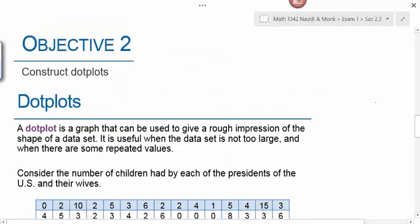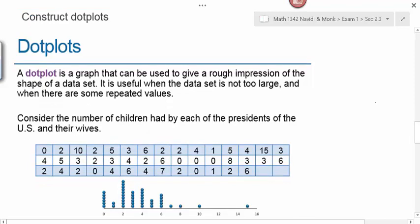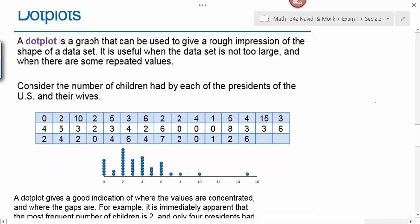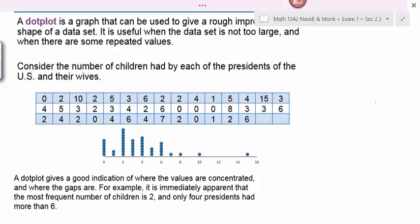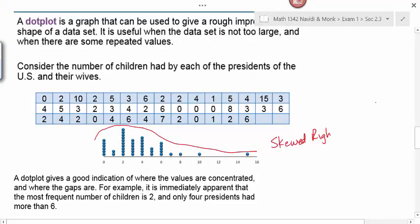Objective two is to construct dot plots. Dot plots are similar to stem and leaf plots in that we use each individual data value, but instead of recording numerical digits we place a dot for each data value. Consider the number of children had by each of the US presidents and their wives. Presidents with zero, one, two, three, four children are plotted, and we can see the general shape of the distribution. This is skewed right — remember, the tail tells the tale. The tail goes off to the right. A dot plot clearly shows that the most frequent number of children is two, and that only four presidents had more than six kids.